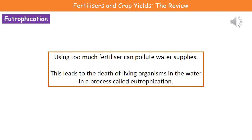If we use too much fertilizer, however, we get a significant problem — a process called eutrophication. What we've done is polluted our water supplies, and this can lead to the death of living organisms in the water. Eutrophication is the result of overuse of fertilizers in farmers' fields.